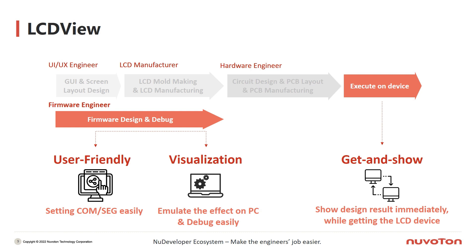LCDView is a user-friendly and flexible tool that makes engineers finish jobs easier. It will avoid making mistakes in the evaluation stage, which always wastes much more time and cost while fixing faults. To summarize the power of this tool: LCDView can show the effect in advance while firmware design is working simultaneously, which is good for UI/UX and firmware engineers. Because it is visible, customers can modify it easily before LCD enters the manufacturing stage, meaning firmware is almost done before getting an actual device.